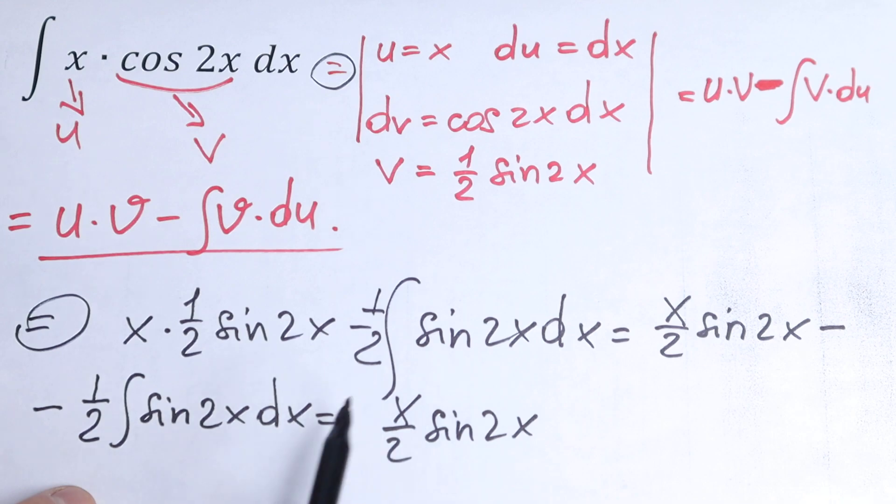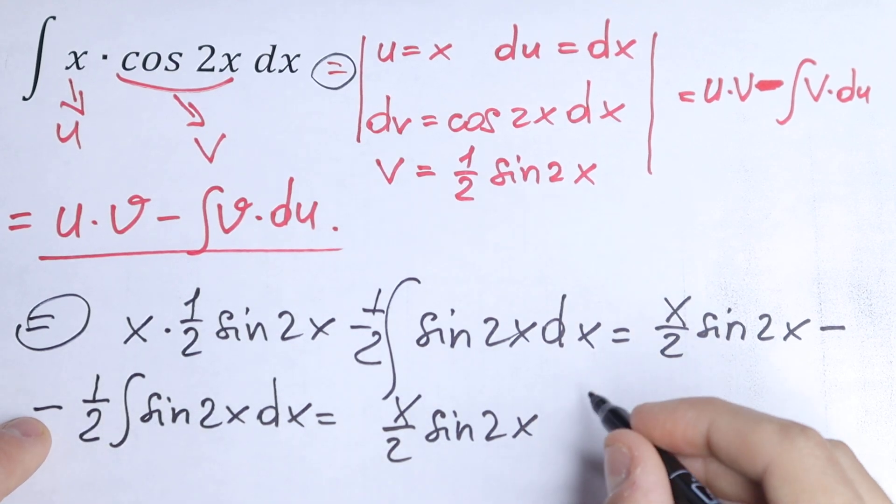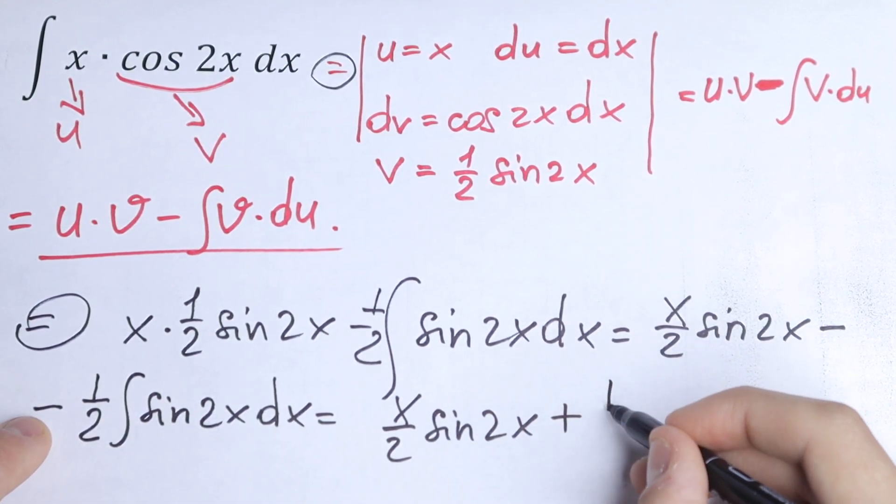So as a result, sine will be minus cosine if we're talking about the integral. So this will have plus, plus one over four.